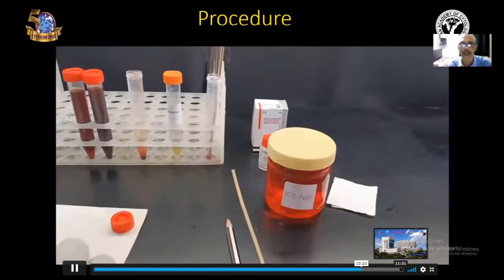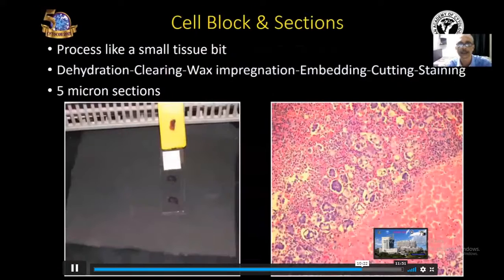So, this is the procedure and at the end of the procedure, this cell block will go for processing as a small tissue biopsy and this block will go through dehydration, clearing, paraffin impregnation, embedding, cutting and staining.